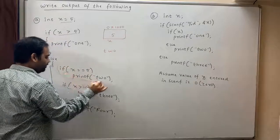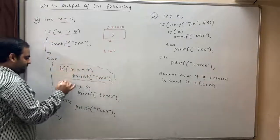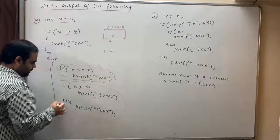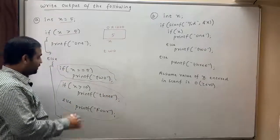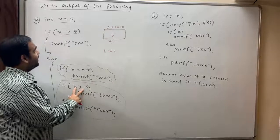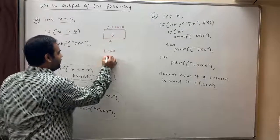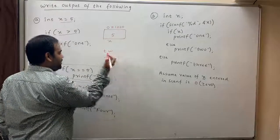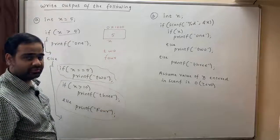Notice one thing. This is a separate if and this is a separate if-else. 8 greater than 10, it is false. Therefore, it will print 4 as output. Hence, the output of this question is 2 and 4.